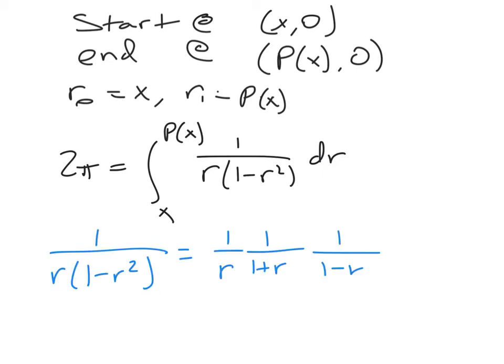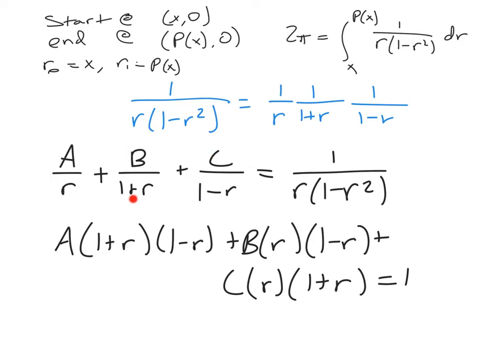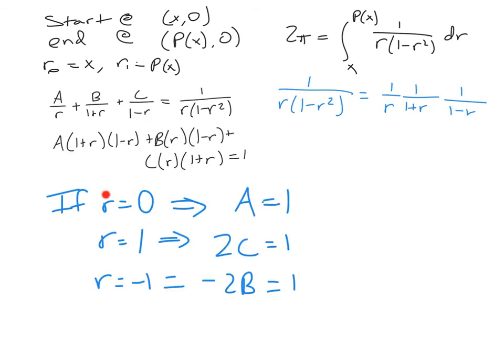First, we factor our denominator, and it factors into 1 over r times 1 over 1 plus r times 1 over 1 minus r. Then we're going to rewrite this as a sum of fractions. So we want to break this apart into a sum of fractions, and we just don't know what the numerators are. We multiply through to give everything a common denominator, and we know that our new numerator on the left-hand side needs to be equal to 1. To find values, we're just going to plug in r equals 0, and that'll tell us about a, r equals 1 to learn about c, and r equals negative 1 to learn about b. Plugging in r equals 0, I learned a is 1. Plugging in r equals 1, I learned 2c is 1, and plugging in r is negative 1, I learned negative 2b is 1.